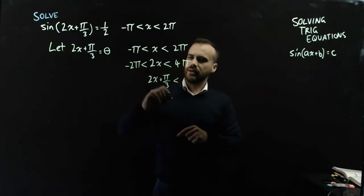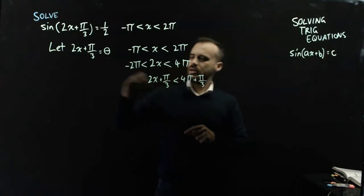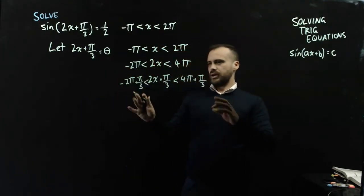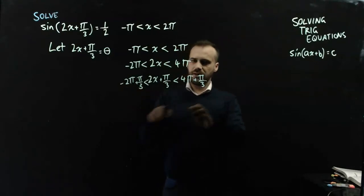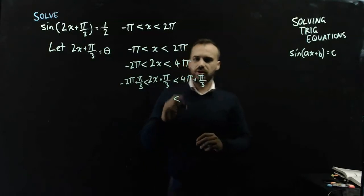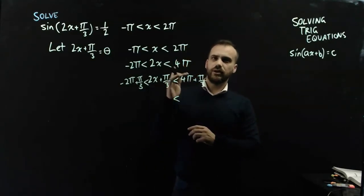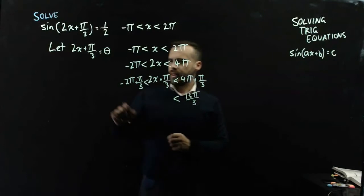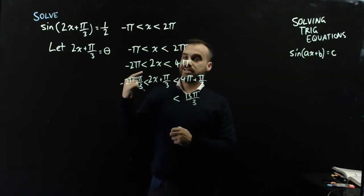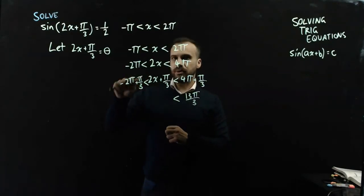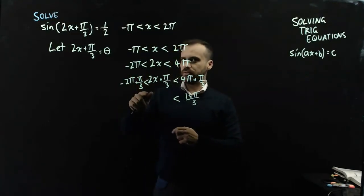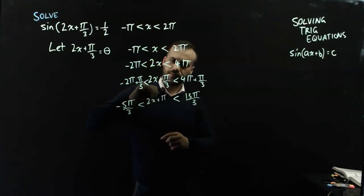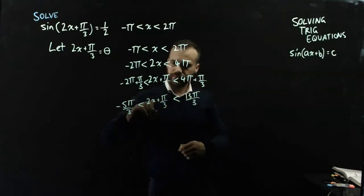4pi plus pi on 3, and negative 2pi plus pi on 3. Alright, now obviously I can simplify this thing on the left and this thing on the right as well. So 4pi is the same as 12pi on 3 plus pi on 3, that's 13pi on 3. And negative 2pi is the same as 6pi on 3 plus pi on 3 is negative 5pi on 3. And I suppose 2x plus pi on 3 is theta.